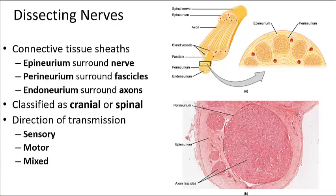The connective tissue sheaths surrounding nerves include the epineurium, which surrounds each nerve; the perineurium, which surrounds a fascicle or bundle of nerve fibers; and the endoneurium, which surrounds the axon itself. Nerves can be classified as cranial or spinal, and based on the direction of transmission: sensory (afferent, moving toward the CNS), motor (efferent, moving away), or mixed containing both. There are 12 pairs of cranial nerves and 31 pairs of spinal nerves.